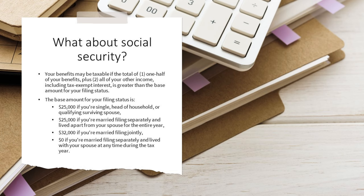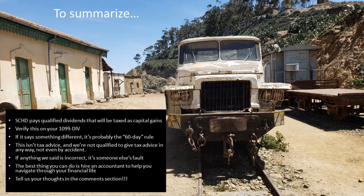You also need to consider Social Security. The IRS rules state that you take one half of your Social Security benefits, add it to all other income, and if that amount exceeds certain base amounts, you start paying taxes on your benefits. You can see how complex this is — which goes back to the original advice: you need to hire an accountant.